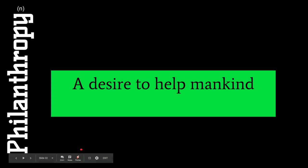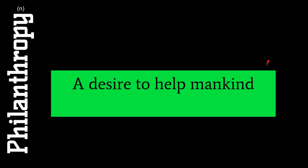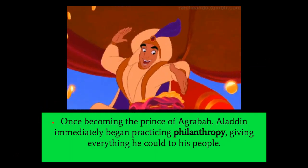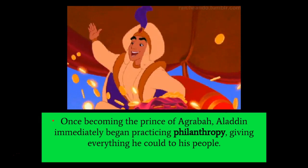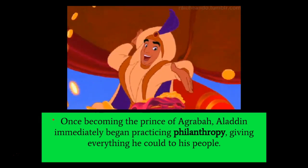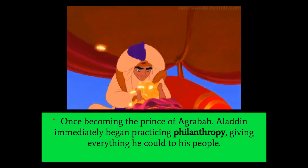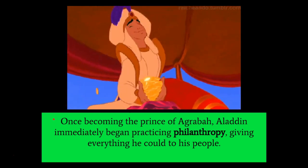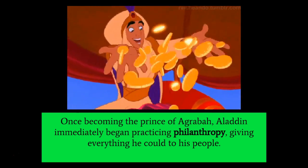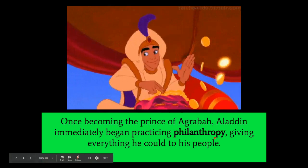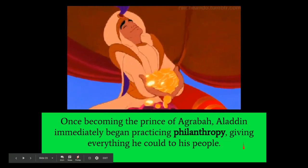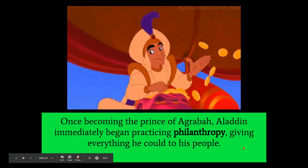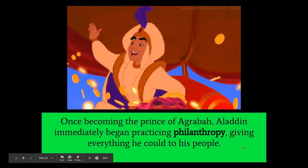Our next word is philanthropy, which is a noun, and it means a desire to help mankind. Once becoming the prince of Agrabah, Aladdin immediately began practicing philanthropy, giving everything he could to his people. This word might remind you of the word miser, because they are definitely in opposition — someone who practices philanthropy, giving everything to others, would not be a miser who hoards possessions for themselves.